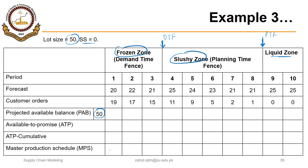Period 1 is inside the demand time fence and period 3 marks the planning time fence — the slushy zone and the liquid zone. We have inventory of 50 available and no MPS, so 50 plus 0 minus 90 gives a PAB before considering the next period. In the frozen zone we consider customer orders: 31 minus 17 equals 14, and since 14 is less than the demand of 50, we will have an MPS of 50.